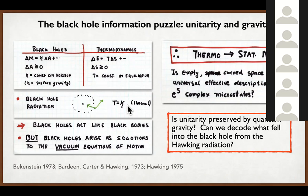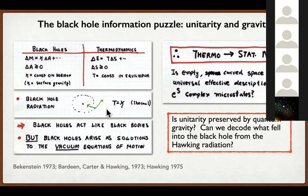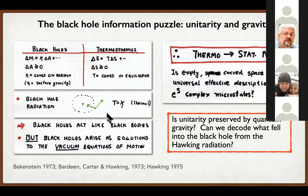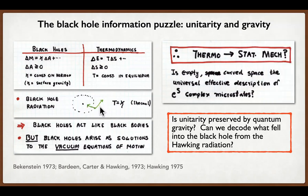How does Hawking radiation happen? Outside the horizon, there is a pair production process: one quantum goes in, another escapes to infinity. Because of the way time points near the horizon, the infalling quantum effectively has negative mass relative to infinity, and the outgoing one has positive mass. So you extract energy from the black hole. The outgoing quantum has become entangled with the interior.